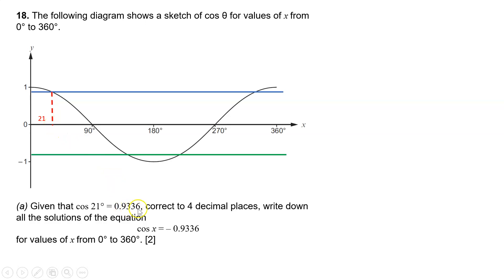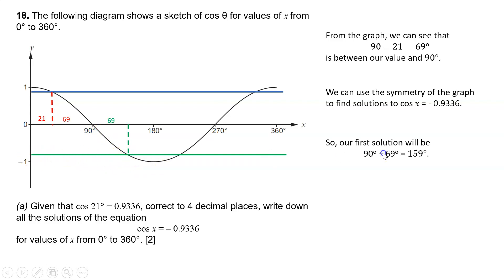So what do we notice? We can see that 90 take away 21 gives us 69. So we've got a 69 in that space between our value and 90. Now looking at the symmetry, we need to find the solutions to cos is minus, the green line. So we have also got 69 between 90 and our green line, where the cos curve crosses the green line, which is minus 0.9336. So our first solution will be 90 plus 69, which gives us 159 degrees.